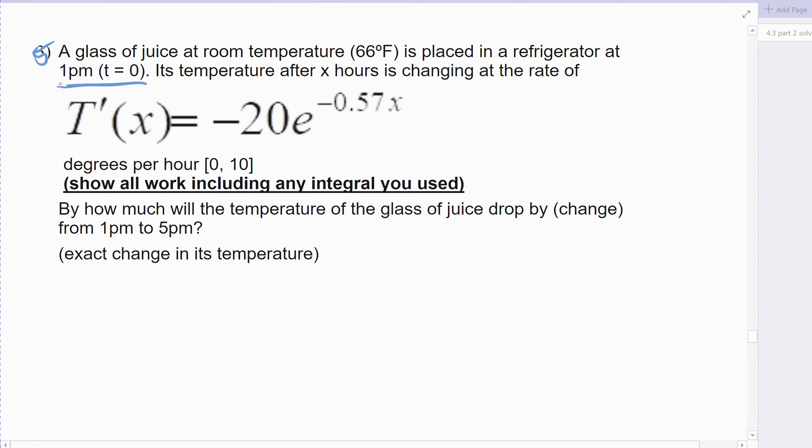Time is hard for students sometimes. So remember, time zero is 1 o'clock, 1 p.m. The first hour that would go by would be from 1 to 2, so that would be time 1, which would be 2 o'clock. Time 2 would be 3 o'clock, time 4 would be 5 o'clock. So again, keep that in mind.